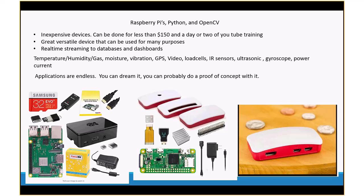So we started exploring other options. There are inexpensive devices — Raspberry Pis — that are less than $150 total. With those, you can program them to do anything you want in the IoT world. It doesn't take much more than a day or two of YouTubing to get started. You can do temperature, humidity, gas, moisture, vibration — various options to help monitor your plant. One thing we're actually implementing is visual detection. It took about two days of Google and YouTube to figure this out, and I am not a true programmer by nature, yet I was still able to figure it out.